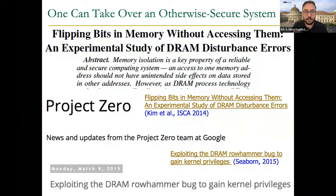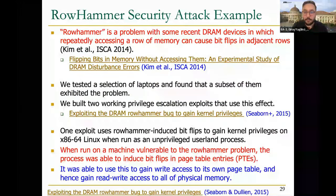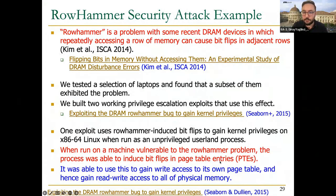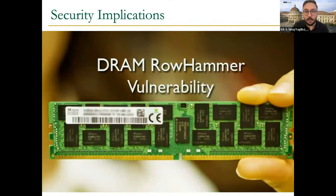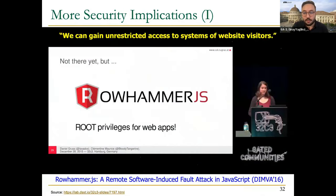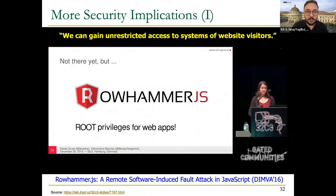Right after we published the paper in 2014, Google Project Zero adopted this work and developed a reliable attack. They induce bit flips in page table entries in physical DRAM, gaining access to the whole page table and taking over the entire system using rowhammer. After publication, there were many security implications across many different papers.